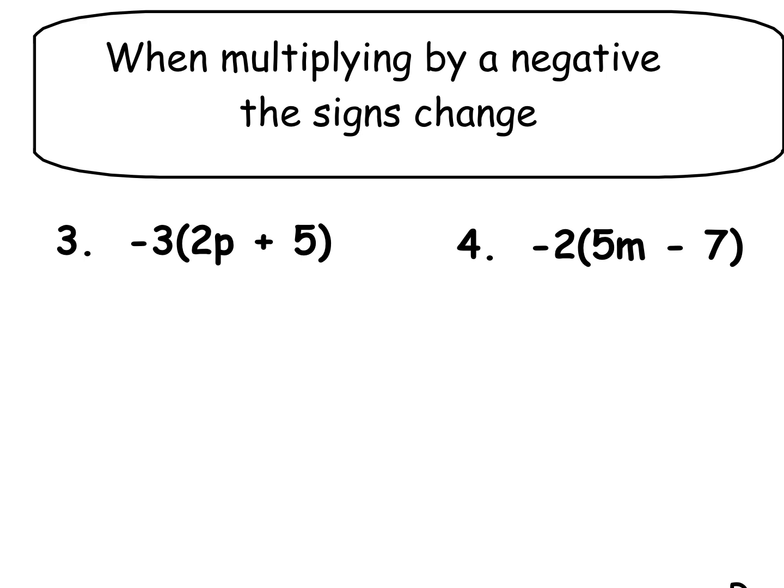Okay, example three, just the same, but I've got more numbers going on inside the brackets now. I'm going to do negative three times 2p, which gives us negative 6p. And then I'm going to do negative three times 5. So 3 times 5 is 15, but the sign will change to a negative 15 because a positive and a negative will make a negative.